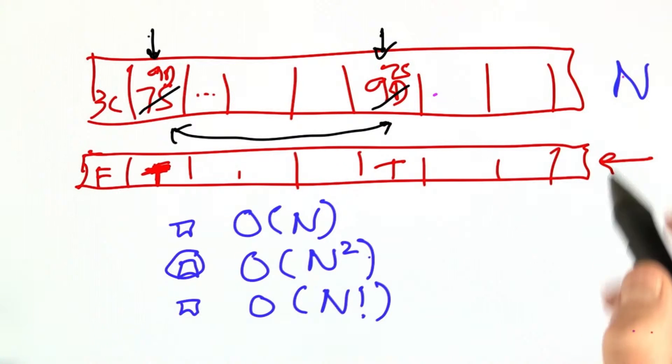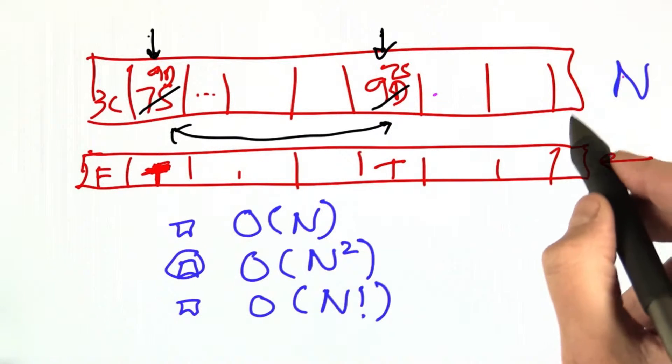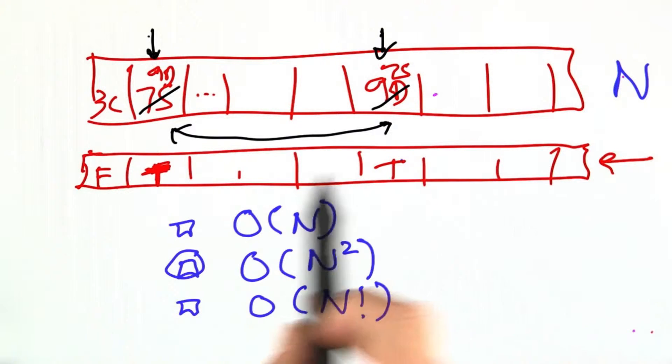And the way you can see that is to think about how long it's going to take to get the very last item of this swapped array filled in.